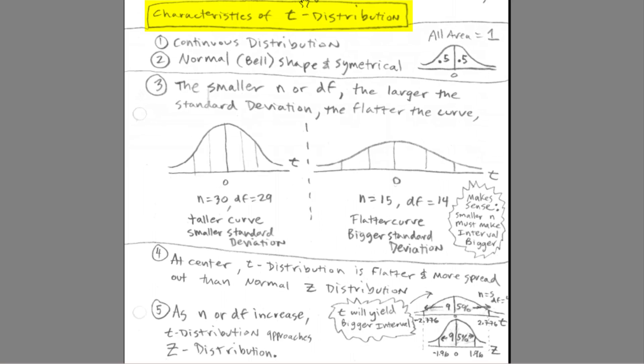Characteristics, very similar to the z-distribution. Continuous, normal, or bell-shaped, and symmetrical. So that means we have that line down the middle, 0 for the t or the z. But in this case, it's t. 0.5 on this side, 0.5 on this side, all the area is 1. The symmetrical means 0.5 there, 0.5 there.